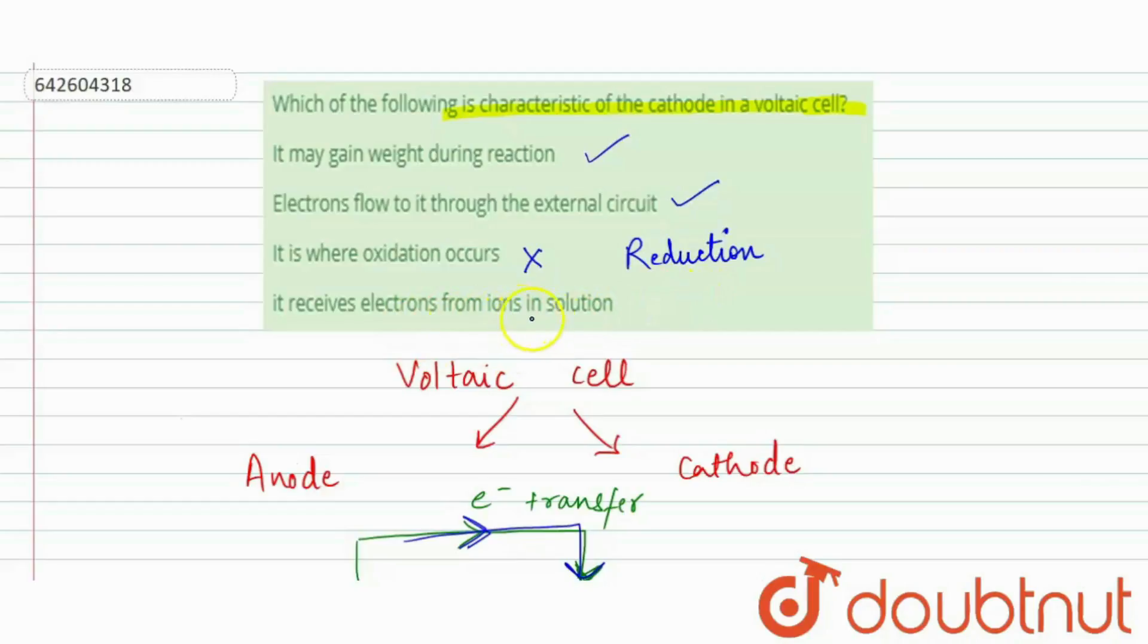It receives electrons from ions in solution. It is also incorrect, because it receives electrons from the anode. So our correct statements are first and second. Thank you.